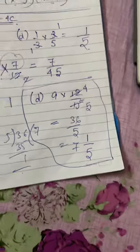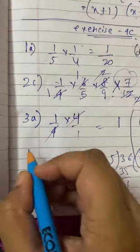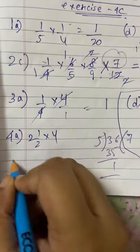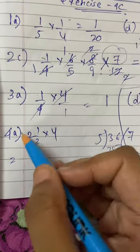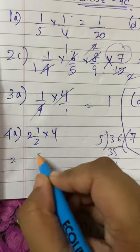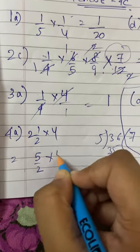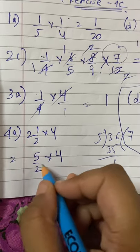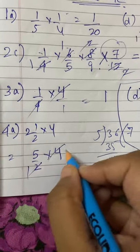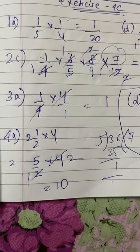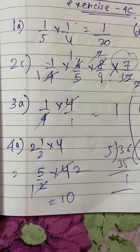Question number 4, sub-question A: 2 and a half into 4. First convert the mixed number to an improper fraction: 2 into 2 = 4 plus 1 gives 5/2. Then 5/2 into 4. Both 2 and 4 are divisible by 2: divide to get 1 and 2. So the answer is 5 into 2 = 10.